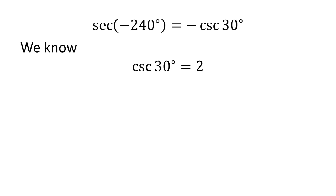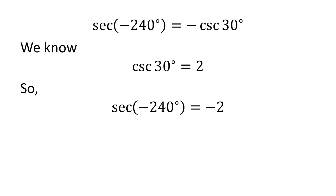We know the value of cosecant of 30 degrees is equal to 2. So we get the value of secant of minus 240 degrees is equal to minus 2.